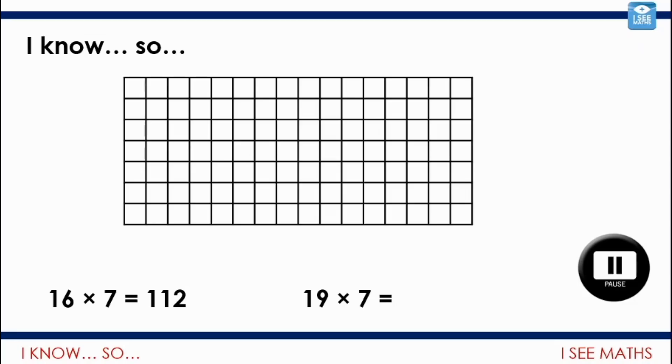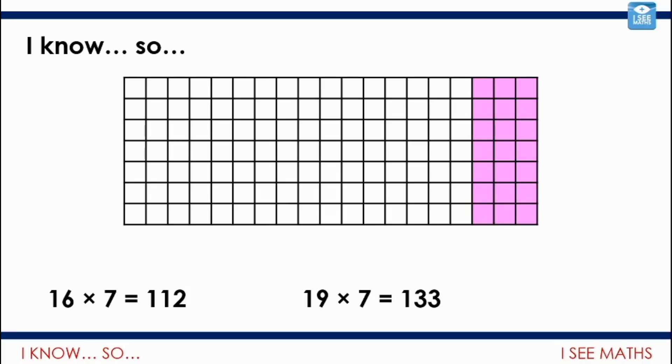Well, let's have a look how it becomes different. And, can you see? Now, I have 19 lots of 7. So, I've got 3 more lots of 7. Can you see them here? So, in total, it is 21 more. So, if I know this, 16 times 7. To work out 19 times 7, I just need 3 more lots of 7.